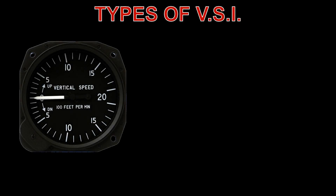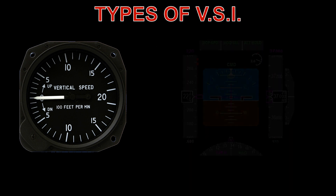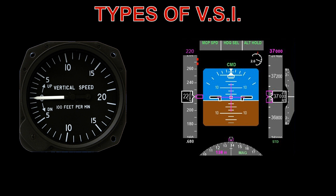A vertical speed indicator, also known as a rate of climb and descent indicator, is an instrument which indicates the rate of climb or descent of an aircraft. The VSI uses the aircraft's static system to determine the vertical speed, and depicts the result on a conventional needle and circular scale instrument, or on a ribbon at the side of an electronic flight instrument system. Two typical VSI indications are depicted below.